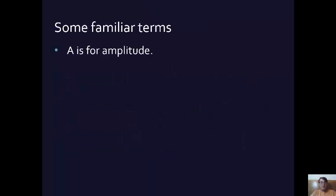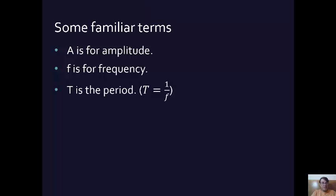Here are some familiar terms from the previous chapter on simple harmonic motion. So A is for amplitude, capital A stands for either the peak positive or the negative peak in the trough. F is for frequency. The period is the inverse of the frequency. So if frequency is cycles per second, the period is seconds per cycle. So the period symbolized by capital T is going to be 1 over the frequency.